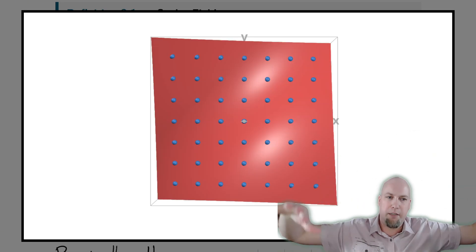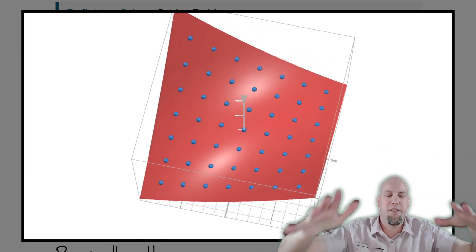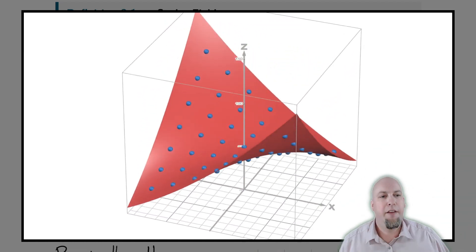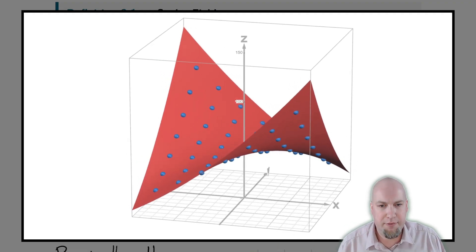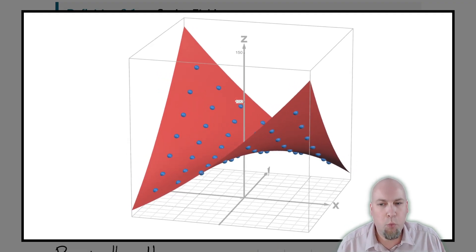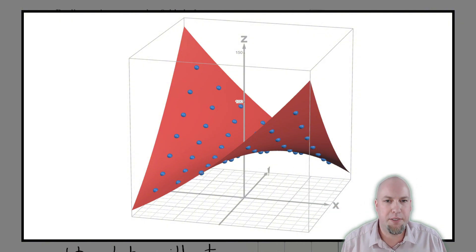If you stitch all these points together, you get the graph of the function, which is a surface—it's a two dimensional shape in three dimensional space. And more generally, it's an m dimensional surface in m plus one dimensional space. And that's still all true. That's a fine way to think about scalar fields.